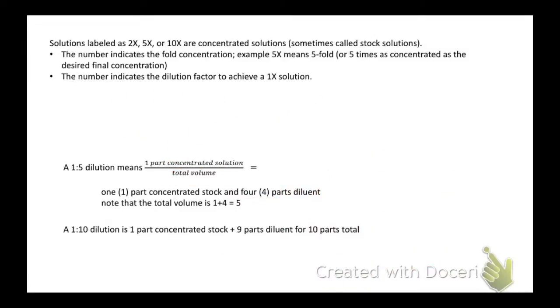And the same is true if you're looking at other kinds of dilutions. A 1 to 10 dilution means you've got one part of concentrated stock plus 9 parts of diluent to give 10 parts total.